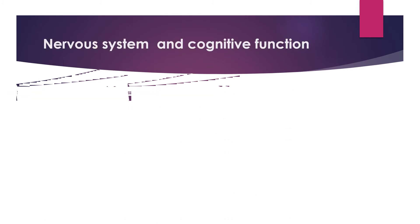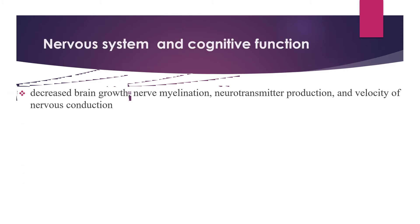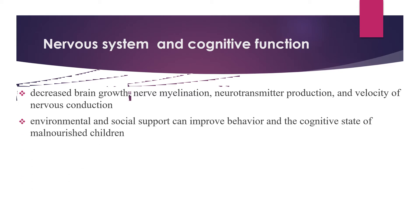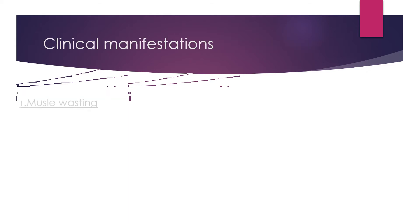Regarding the nervous system and cognitive function in severe acute malnutrition, there is decreased brain growth, decreased nerve myelination, decreased neurotransmitter production, and decreased velocity of nerve conduction. Environmental and social support can improve behavior and cognitive state.